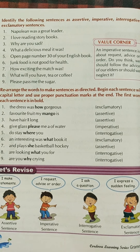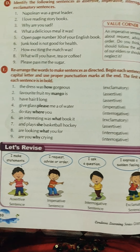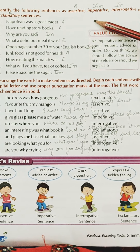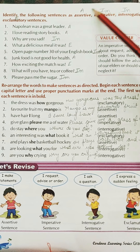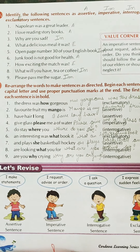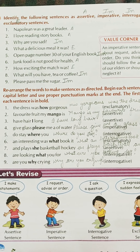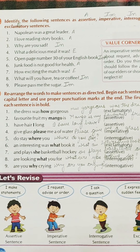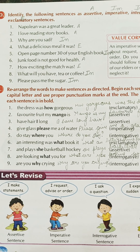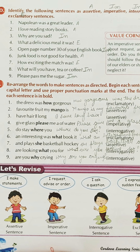Now you have an exercise — try it on your own first, and then I'm going to share the answers. Identify the following sentences as assertive, imperative, interrogative, or exclamatory. You can use short forms: A for assertive, IM for imperative, IN for interrogative, and E for exclamatory. Answers: 'Napoleon was a great leader' — assertive; 'I love reading storybooks' — assertive; 'Why are you sad?' — interrogative; 'What a delicious meal it was!' — exclamatory; 'Open page number 30 of your English book' — imperative; 'Junk food is not good for health' — assertive; 'How exciting the match was!' — exclamatory; 'What will you have, tea or coffee?' — interrogative; 'Please pass me the sugar' — imperative.